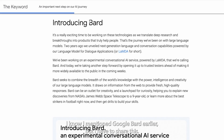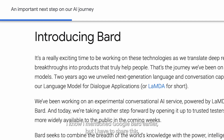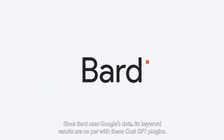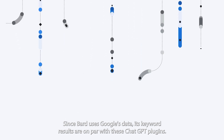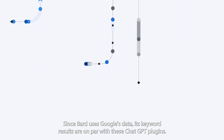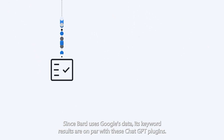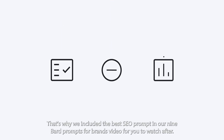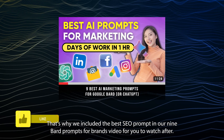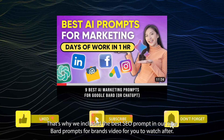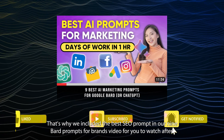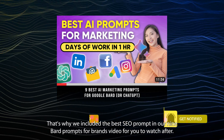I know I mentioned Google Bard earlier, but I have to share this. Since Bard uses Google's data, its keyword results are on par with these ChatGPT plugins. That's why we included the best SEO prompt in our nine Bard prompts for brands video for you to watch after.